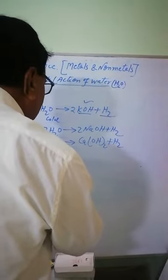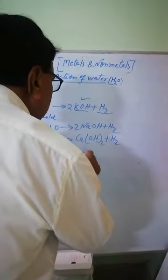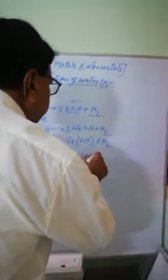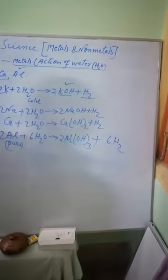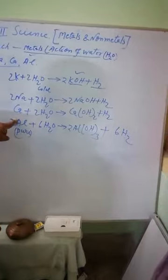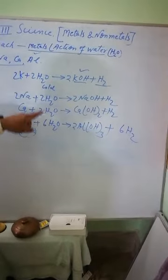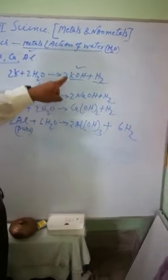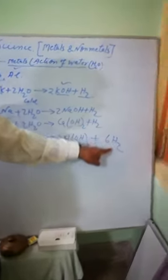So let me summarize what we have understood. Potassium, sodium, calcium, and pure aluminum react with cold water. In all cases, they form their hydroxides and liberate hydrogen.